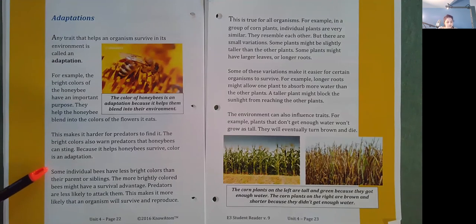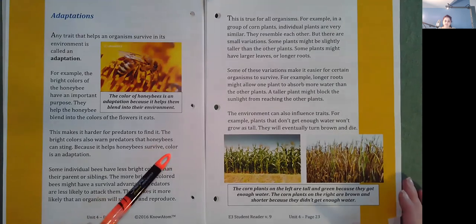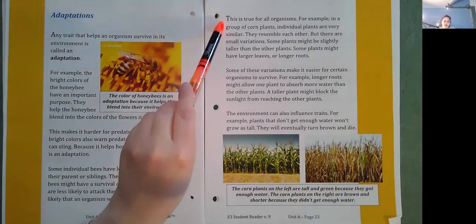Some individual bees have less bright colors than their parents or siblings. The more brightly colored bees might have a survival advantage. Predators are less likely to attack them. This makes it more likely that an organism will survive and reproduce. This is true for all organisms.